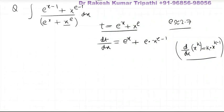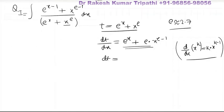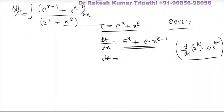Now dt/dx equals this expression. Let the integral be I. If we try to match this result with the numerator of the given integral, we see that x^(e-1) has coefficient 1 in the numerator, but here it is e. So we need to take e as common. Taking e common from the first term, we have e^x divided by e.